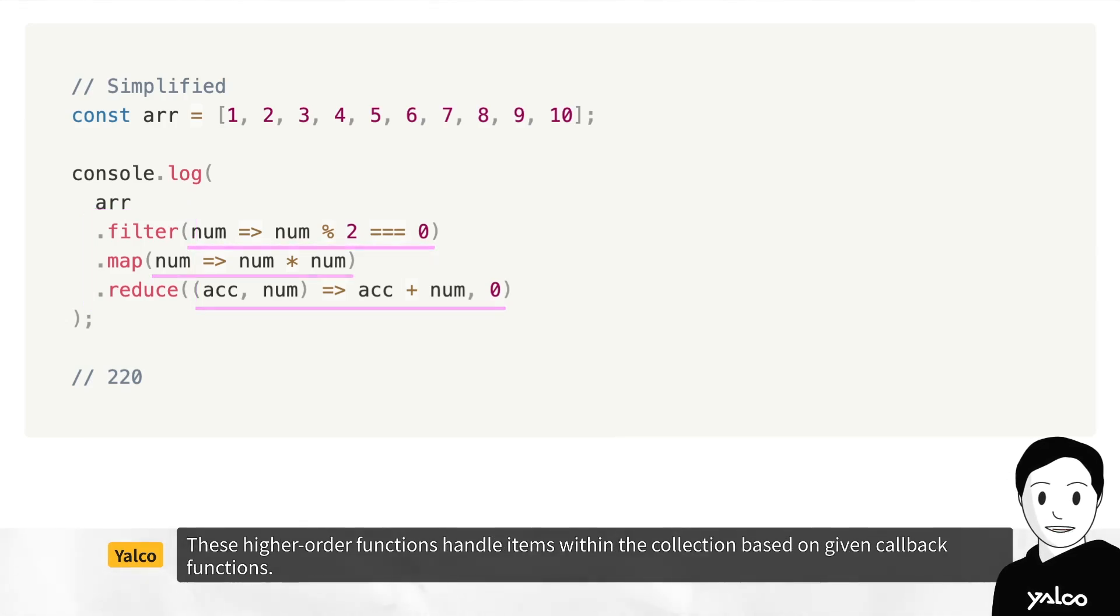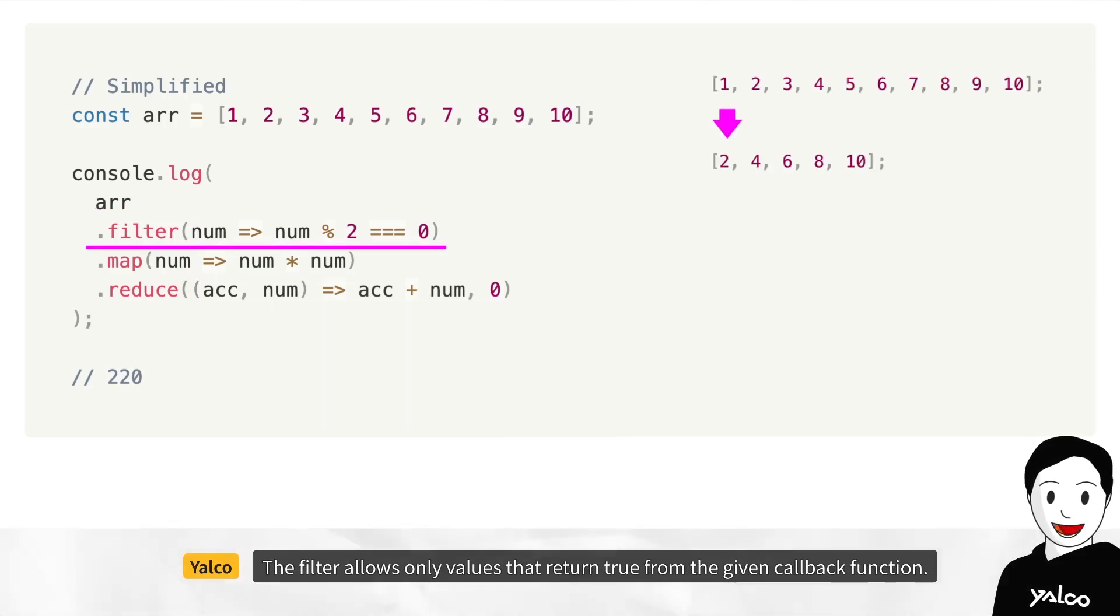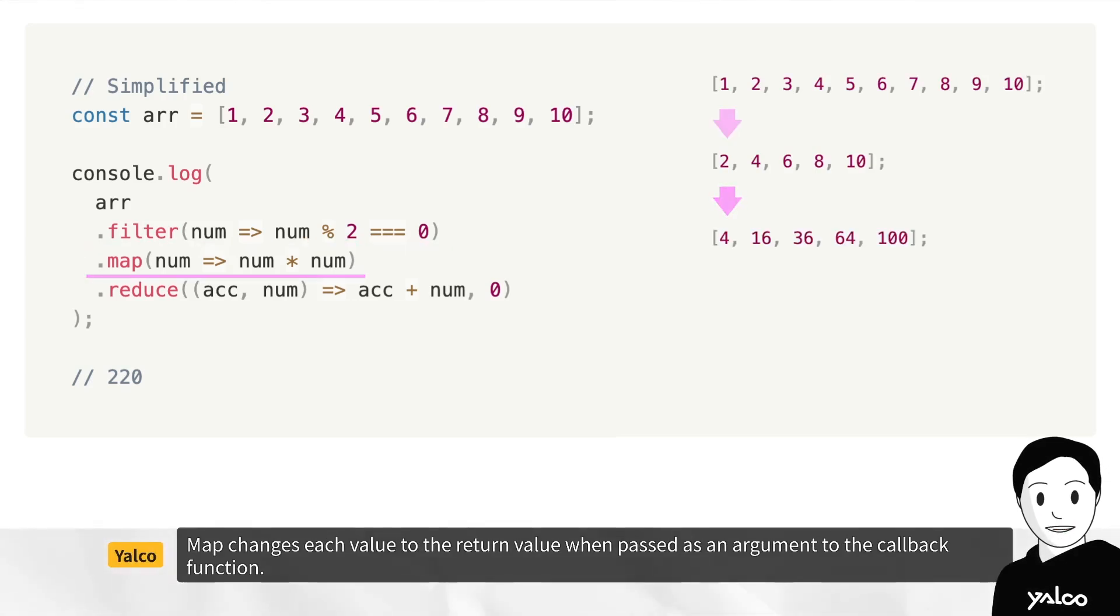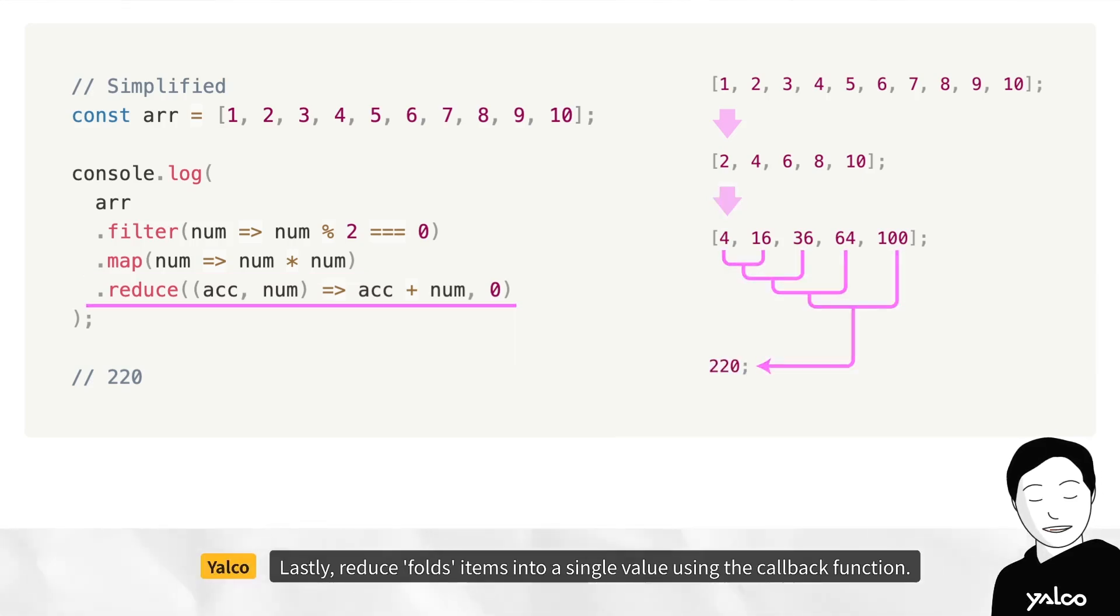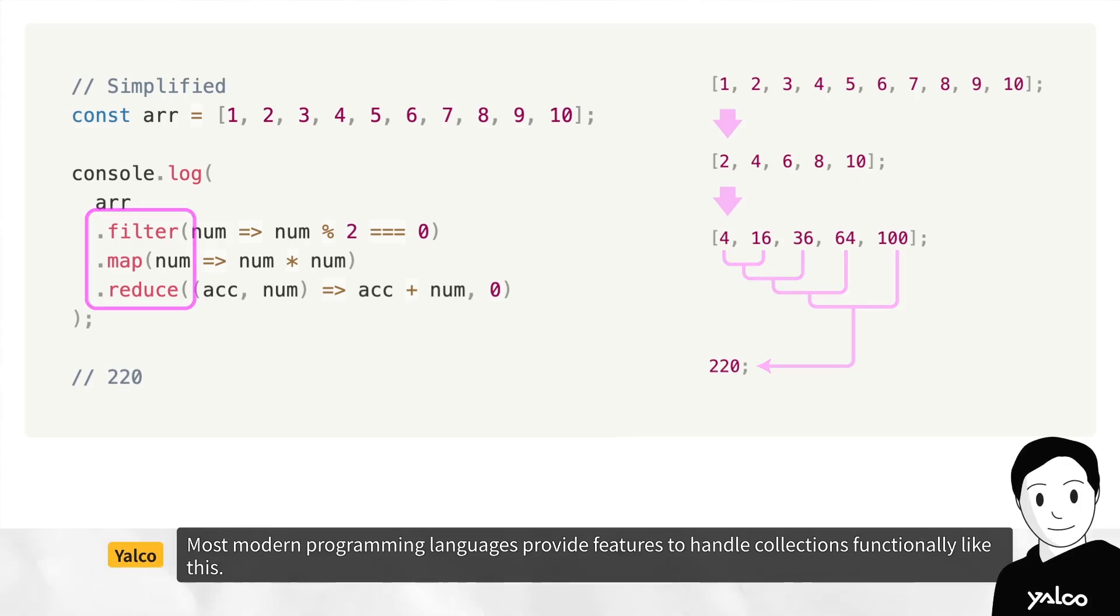Higher-order function methods such as filter, map, and reduce of collections like this array are typical examples of functional programming. These higher-order functions handle items within the collection based on given callback functions. The filter allows only values that return true from the given callback function.